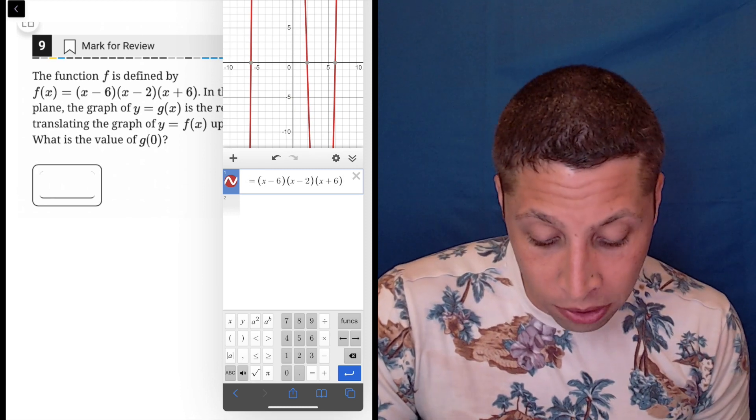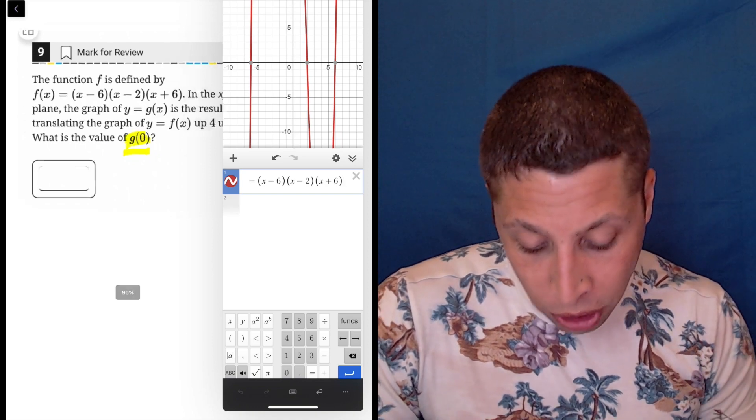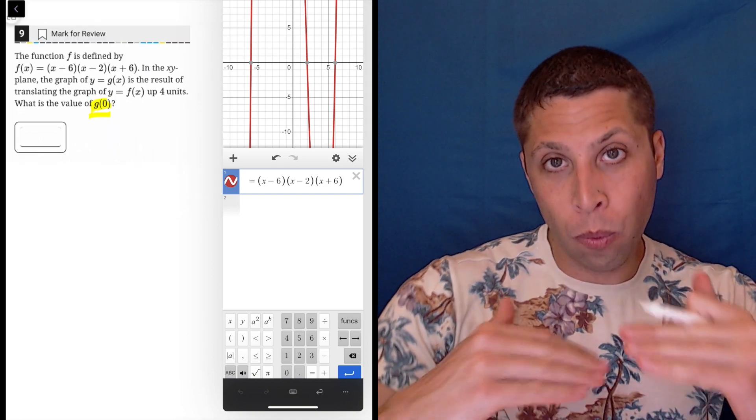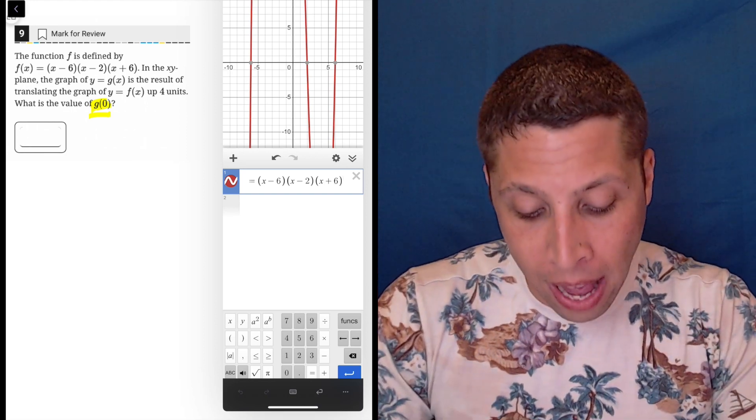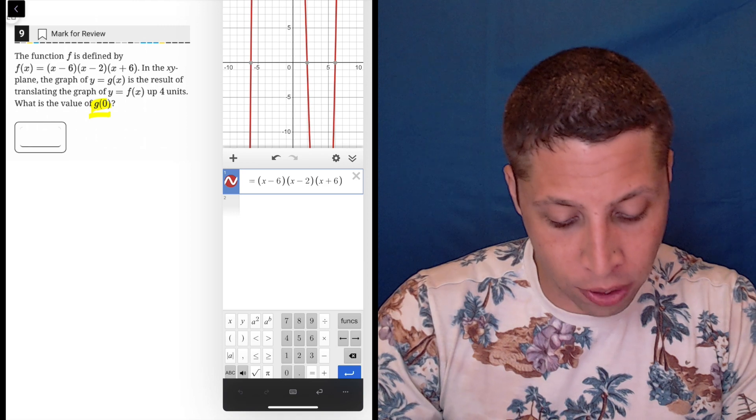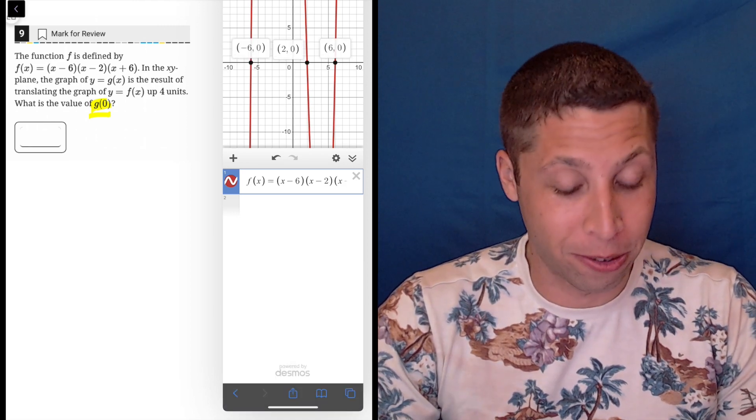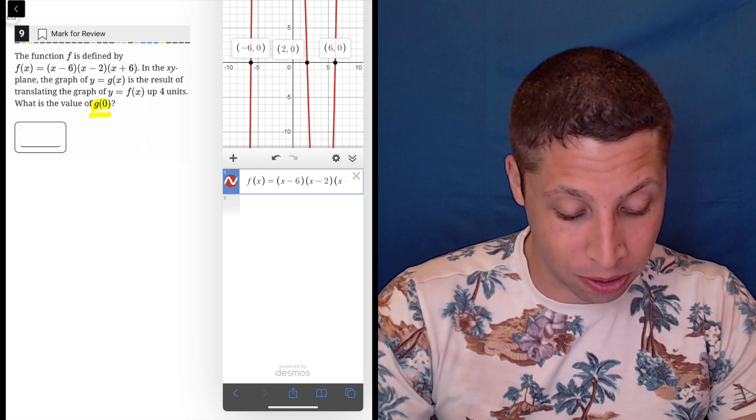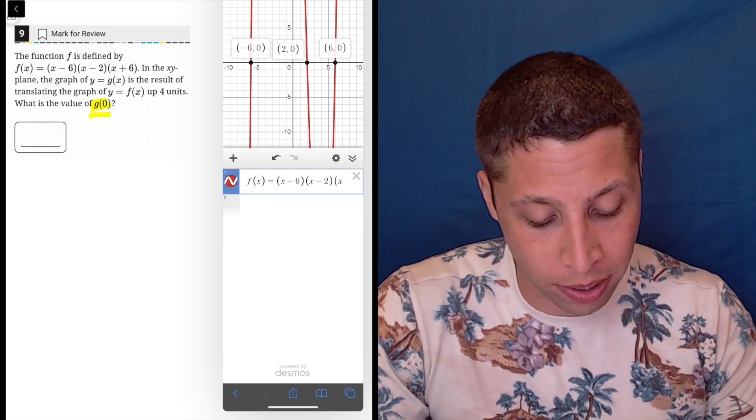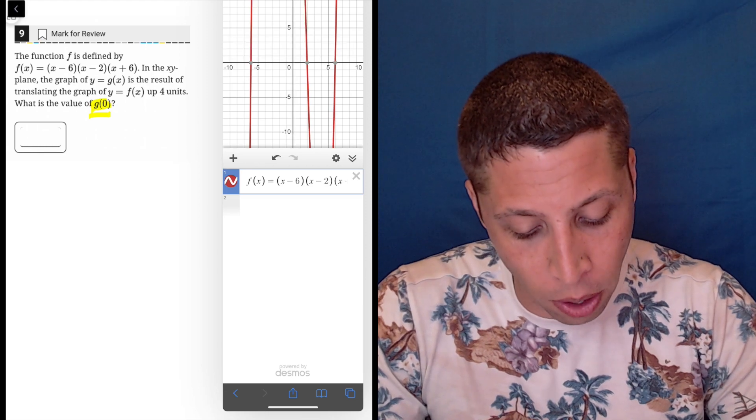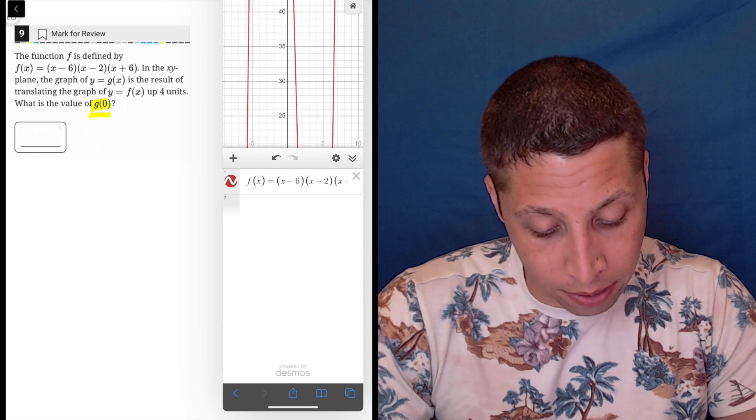Now we're asked for g of 0, which is, since we're shifting it up, we're just moving this thing up. So what I would want to find is where is f of 0, and then change that. So you can see we have a 0 here, here, and here, but those are the wrong kinds of zeros, right? That's where y is equal to 0. We are being asked where x is equal to 0, right? Notice the 0 in parentheses - that's where the x goes. So let's get rid of all those. And we can kind of see that if we scroll up, we're going to find it eventually.